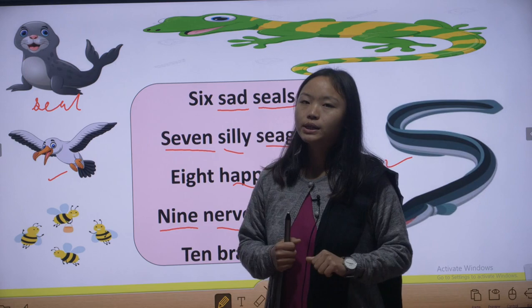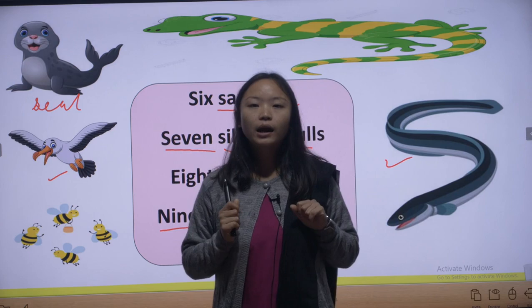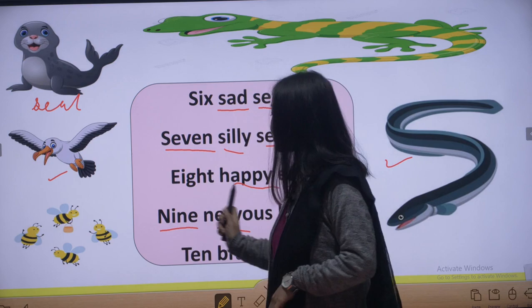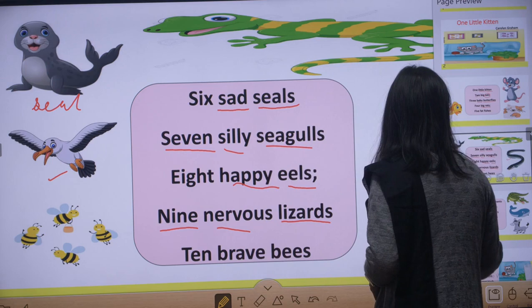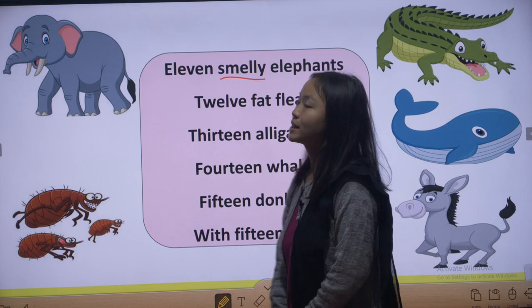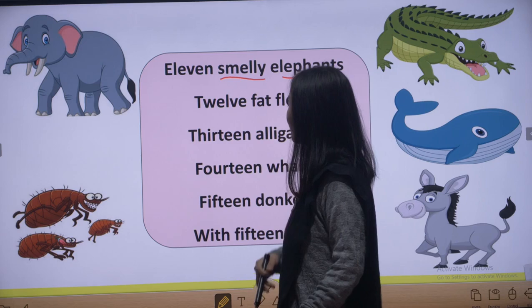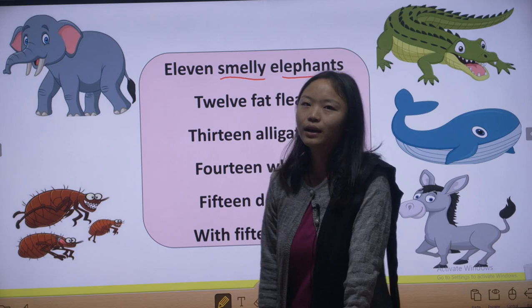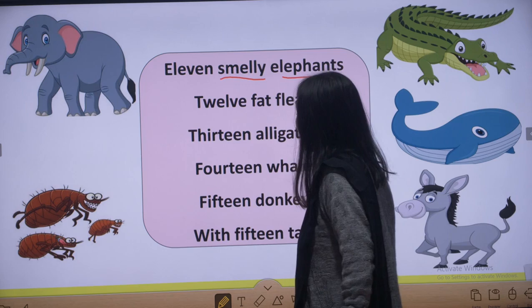Ten brave bees — there are ten bees, and they are brave. Bees are madhu makhi, as you can see in the pictures. Next, eleven smelly elephants — 'smelly' means having a bad smell. The elephants are smelly, which means they haven't bathed, so the poet called them smelly.